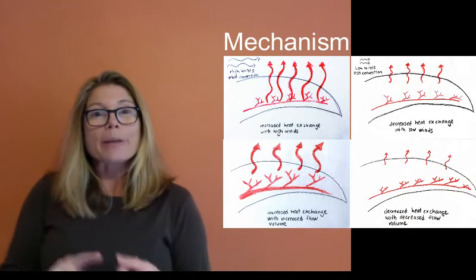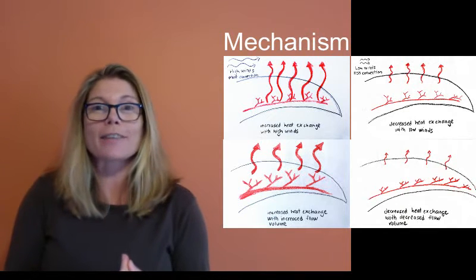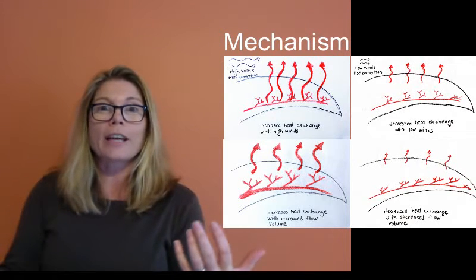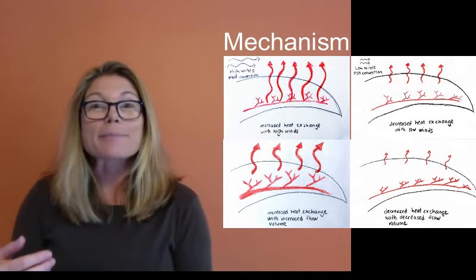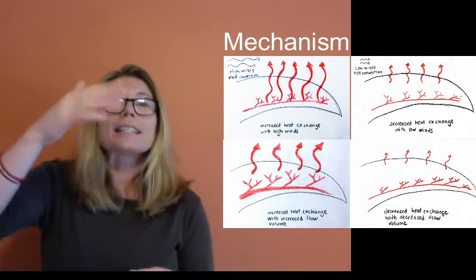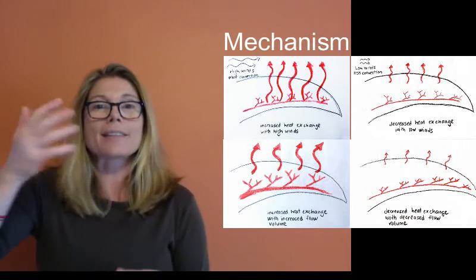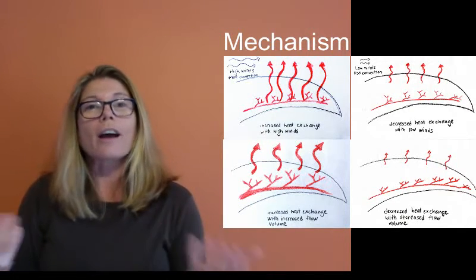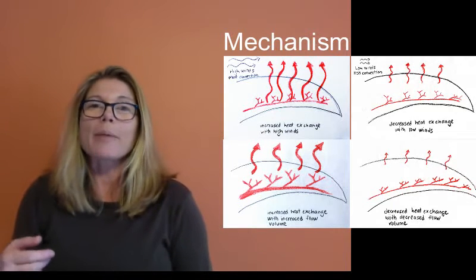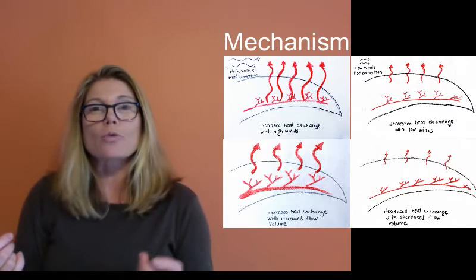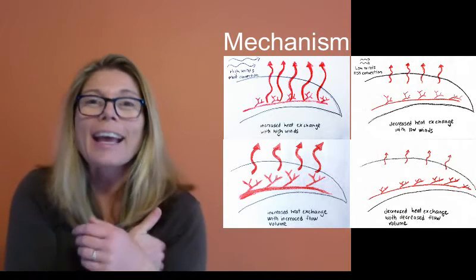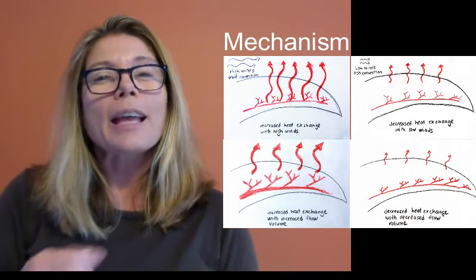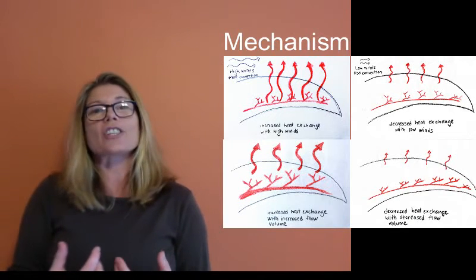Not only that, but toucans also use convection to vent heat to their surroundings. Convection means using the wind to help cool themselves off. On a windy day, the toucan can aim its bill into the wind and dissipate even more heat through convection. On the other hand, if it's already cold or in a good temperature range and doesn't want to lose more heat to the wind, the toucan might stick its bill underneath its wing to prevent heat loss through convection. So the mechanism is a detailed explanation of how the strategy actually works.